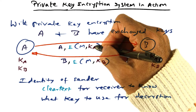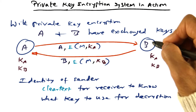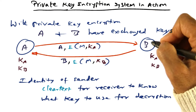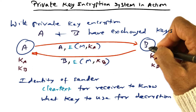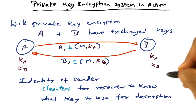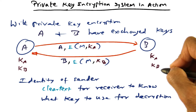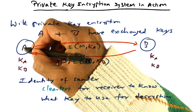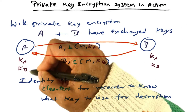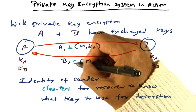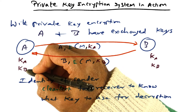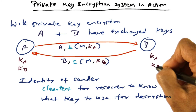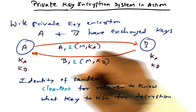Similarly, when B wants to send a message to A, it encrypts it using another private key KB. And when the message comes over here, A will decrypt the message using the same key that was used for encryption, namely KB.